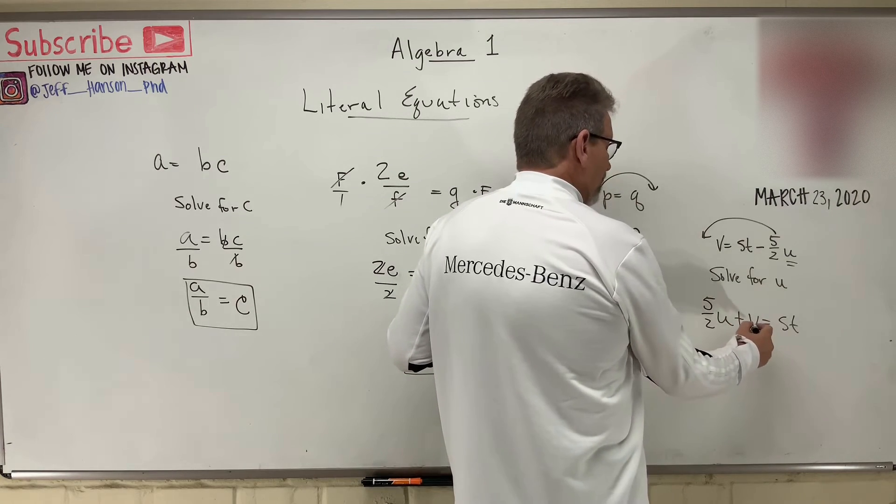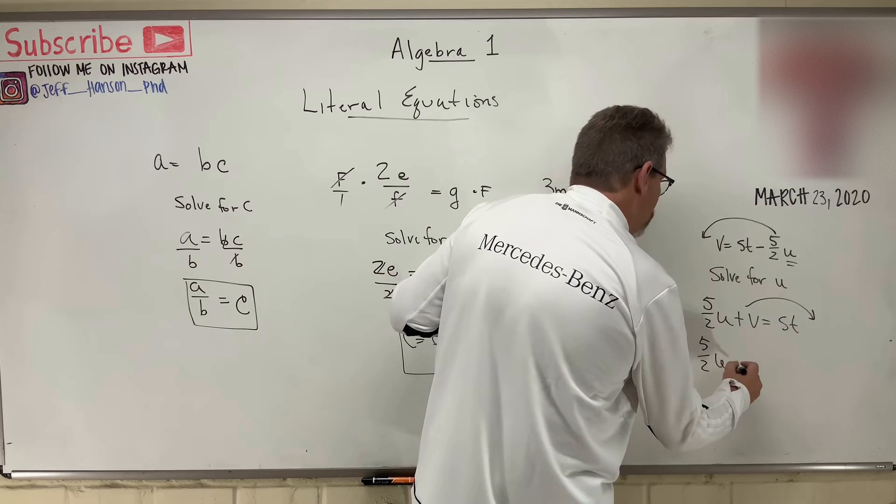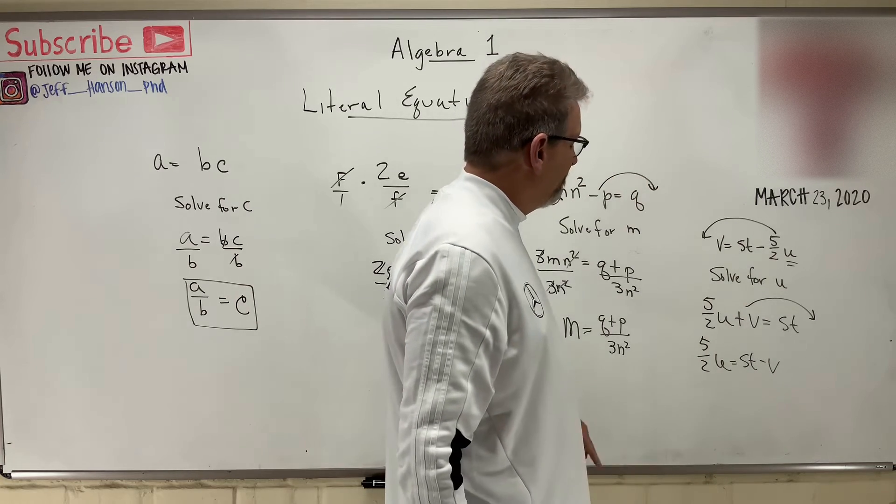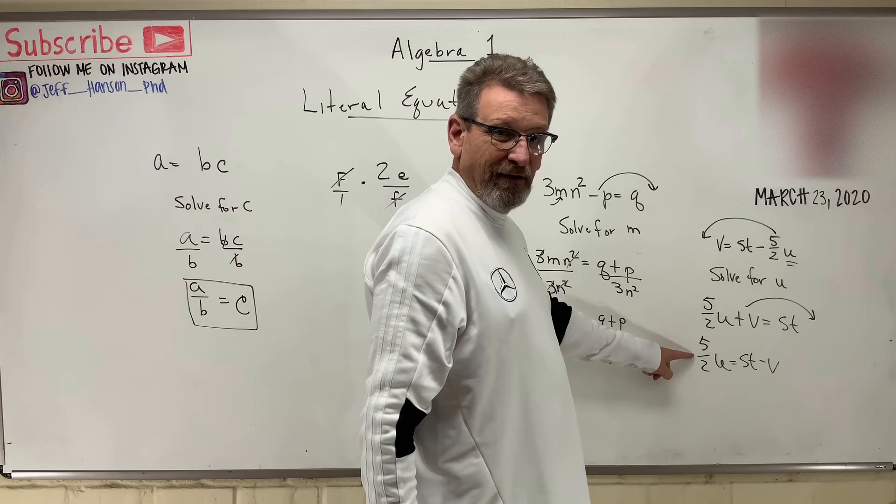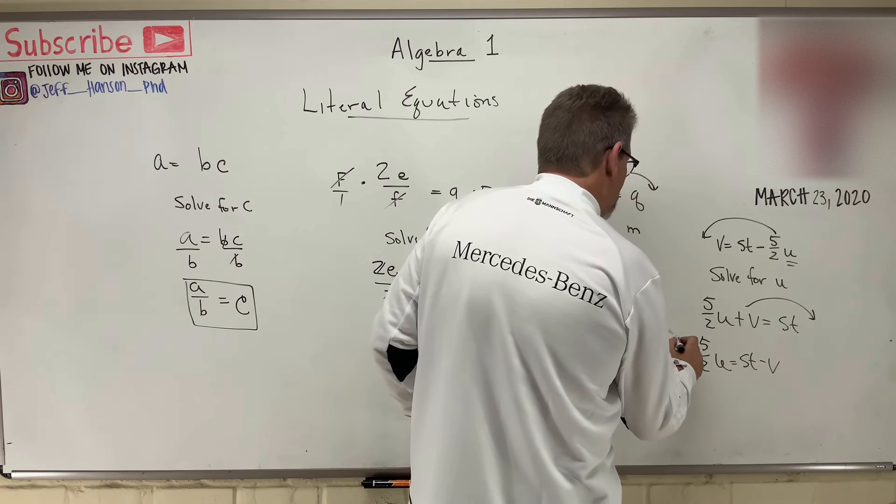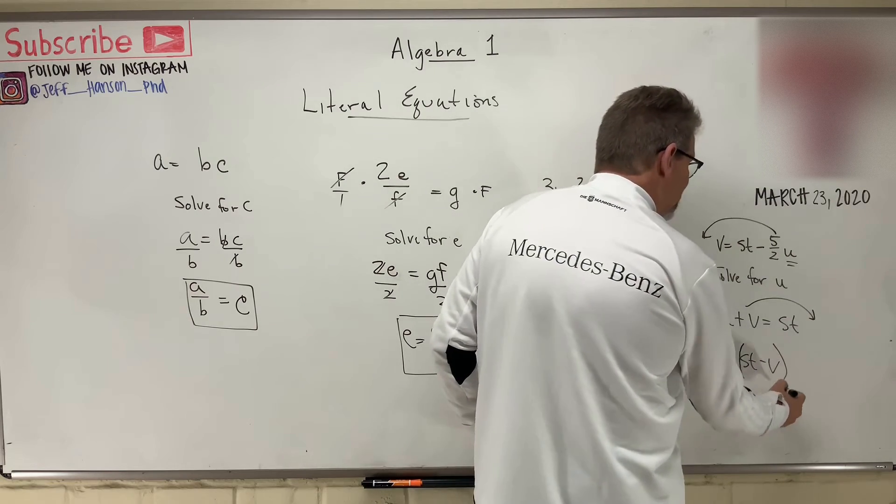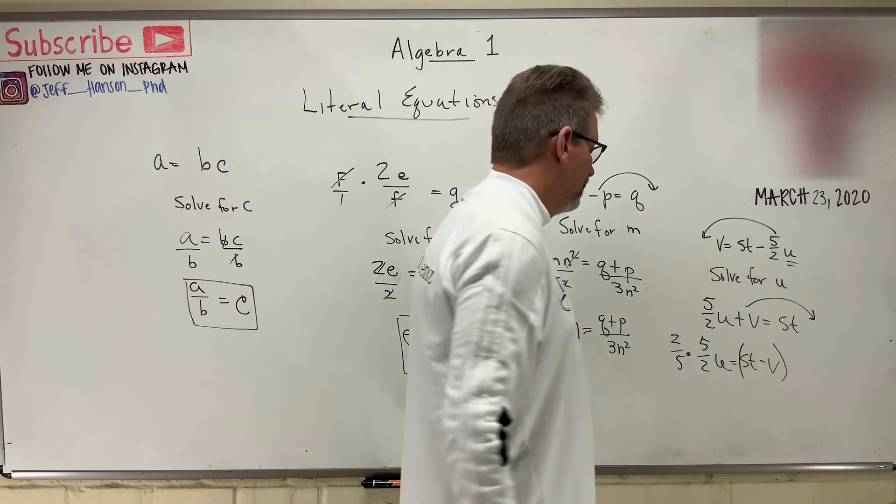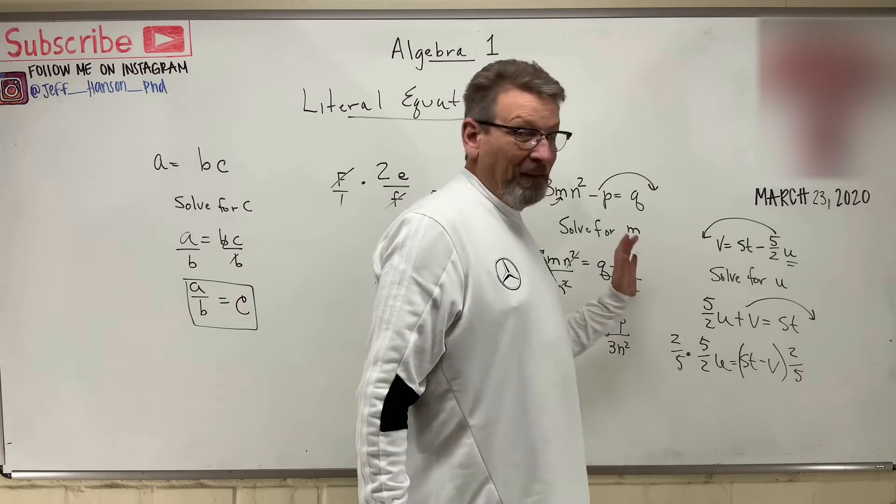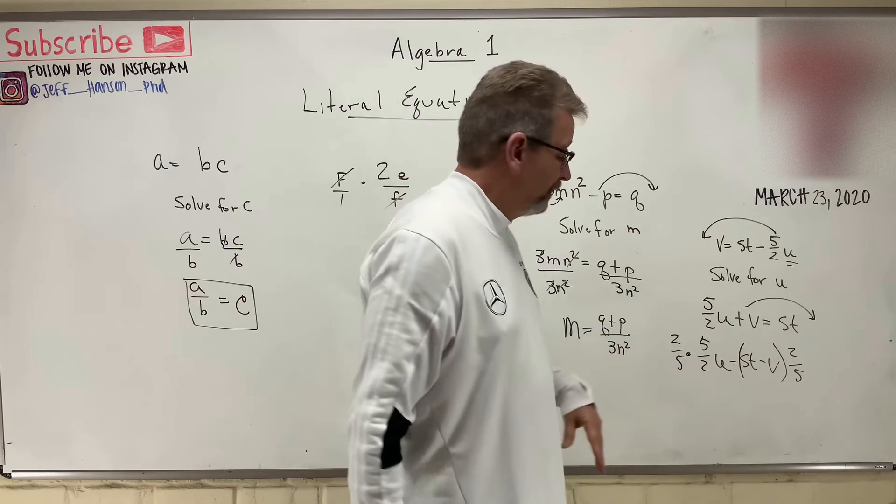Now, I'm going to get rid of the V. Let's put him over there. So, 5 halves U is equal to ST minus V. Okay? Now, I've got to get rid of this fraction here. How do you get rid of a fraction? Multiply by the reciprocal, right? So, times 2 over 5. And then I'm going to have to... These parentheses right here are very important, right? Times 2 over 5. Because I have to multiply the whole other side times 2 over 5. Not just this guy or not just that guy, but the whole thing. Okay?